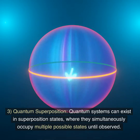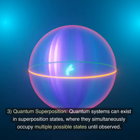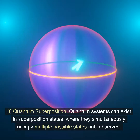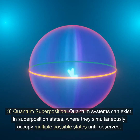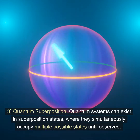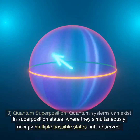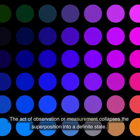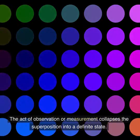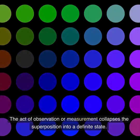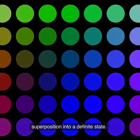3. Quantum superposition. Quantum systems can exist in superposition states, where they simultaneously occupy multiple possible states until observed. The act of observation or measurement collapses the superposition into a definite state.